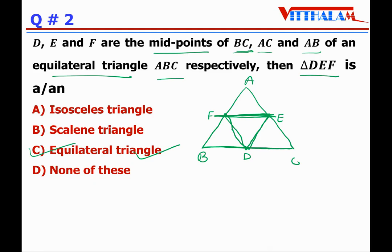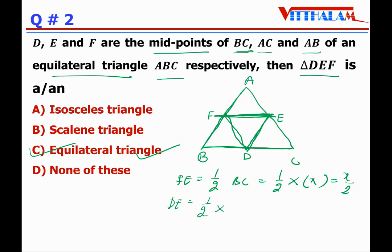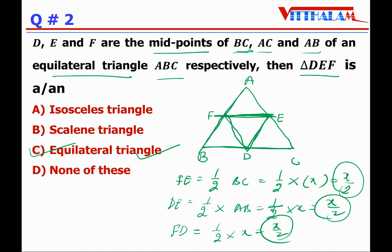The reason: FE connects midpoints of AB and AC, so by the midpoint theorem FE is parallel to BC and equals half of BC. Since all sides of ABC are equal — let's say each is x — FE equals x/2. Similarly, DE equals half of AB = x/2, and DF equals half of AC = x/2. All three sides of triangle DEF are equal, each being half of the sides of equilateral triangle ABC.